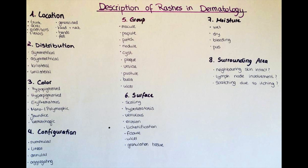In the sixth step we describe the surface of the affected skin and see if it is scaling, if it is hyperkeratotic, verrucous — so warty — or if the surface presents with erosion. Also we can find fissures, ulcers, and granulation tissue.